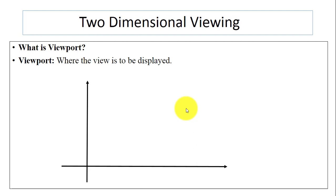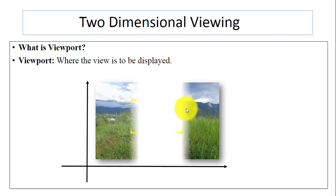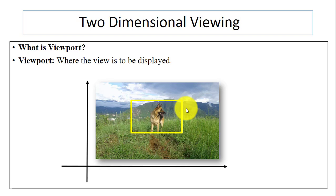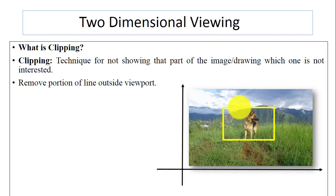Now we have viewport. Viewport means where the view is to be displayed. Suppose I want to display the dog on the screen — that is, on the display device. Using the viewport, you can specify where the view is to be displayed.